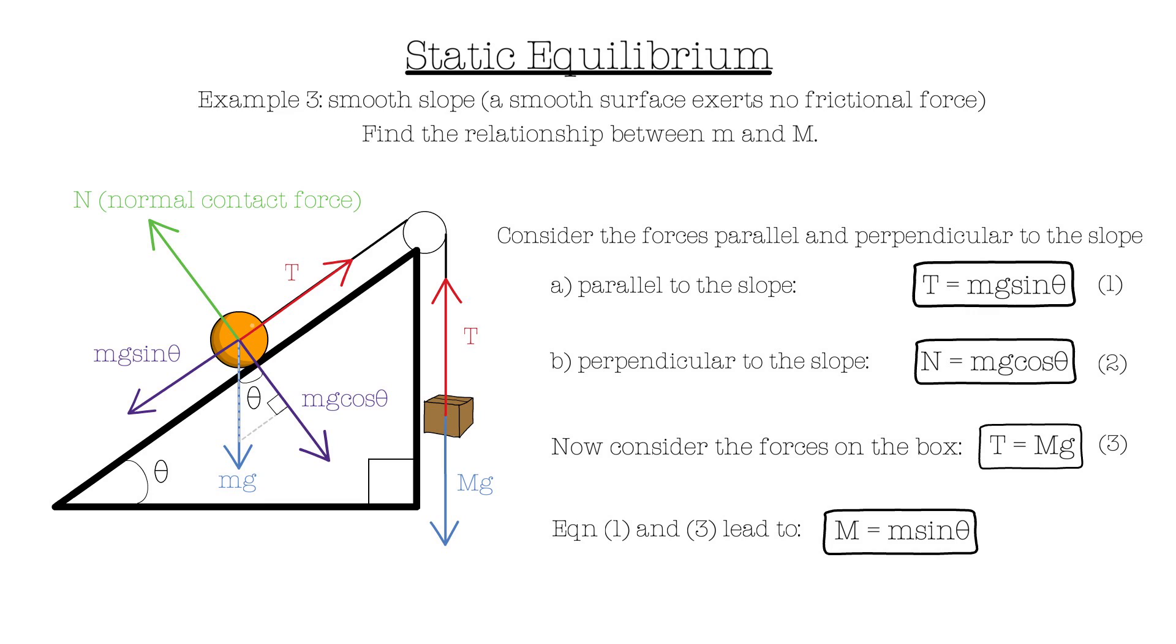We can now find the ratio between the mass of the ball and the box. In this case, the ratio between the two masses would be sin theta.